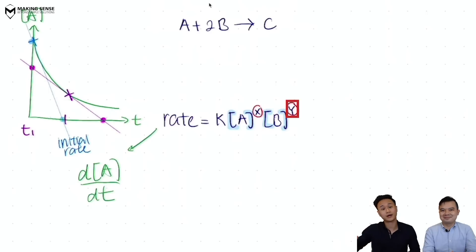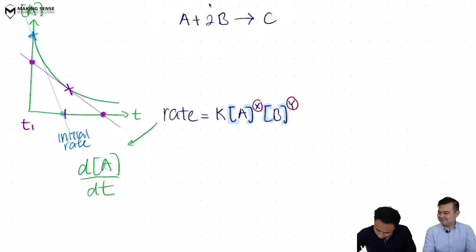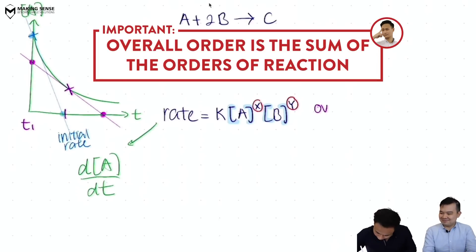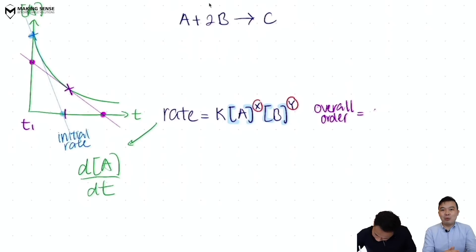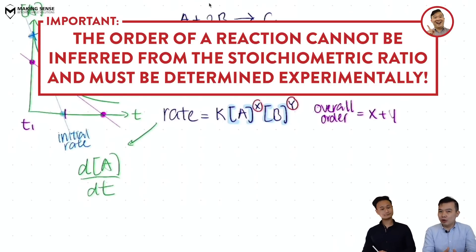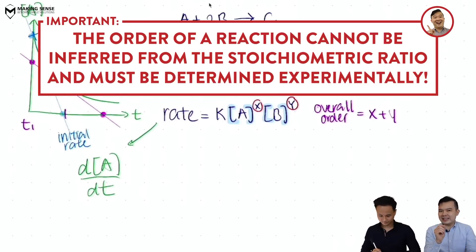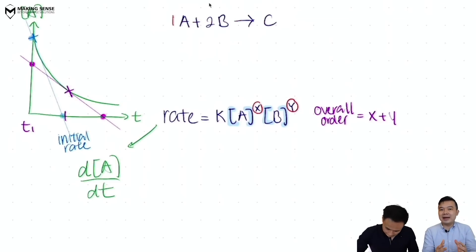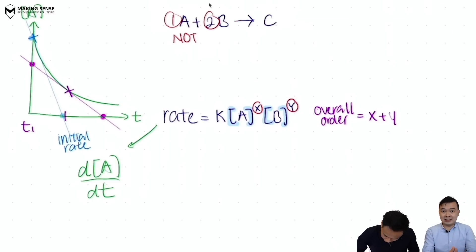There's also something called the overall order, which is just the sum of the individual orders — X plus Y. One very important thing to remember: X and Y are NOT related to the stoichiometry of the reaction (with one exception to be mentioned later). In general, X and Y are always determined experimentally, and later in this video we'll show you how.